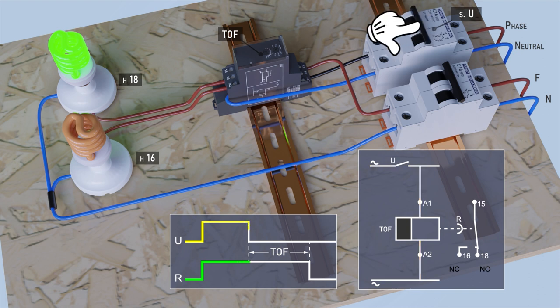If we open the U contact to de-energize the coil, then the disconnection delay time begins to time. When this time is up, contacts 16 and 18 switch to their default state.